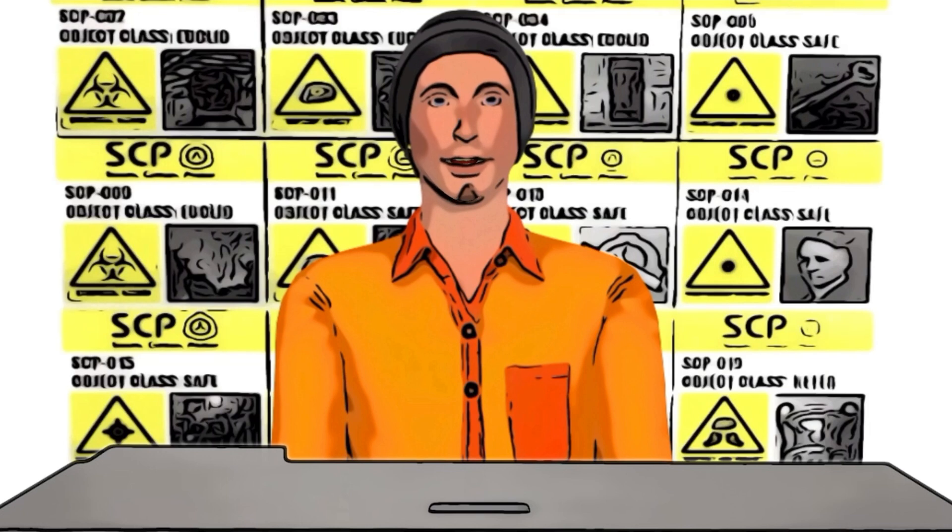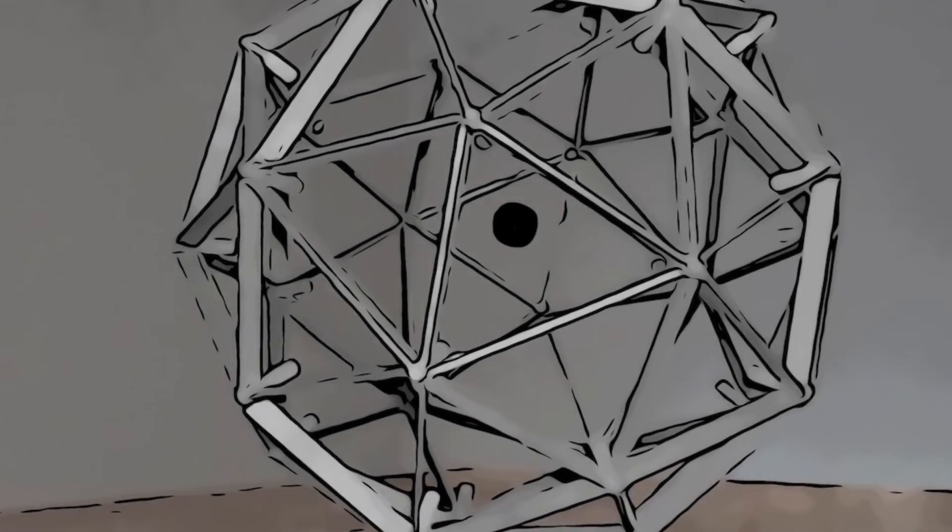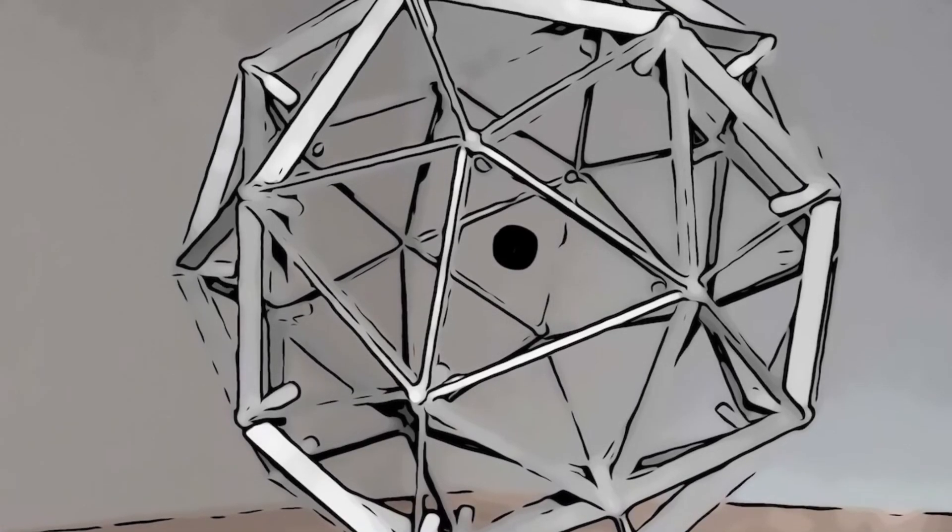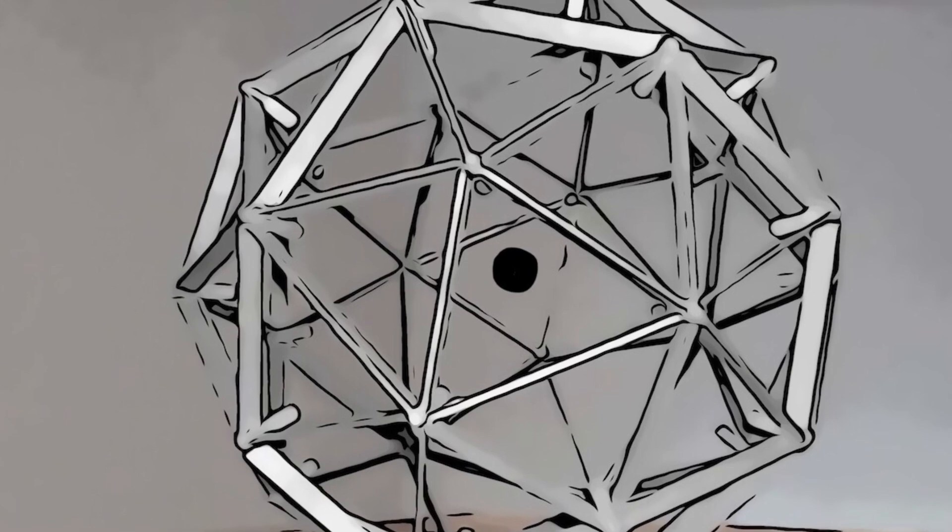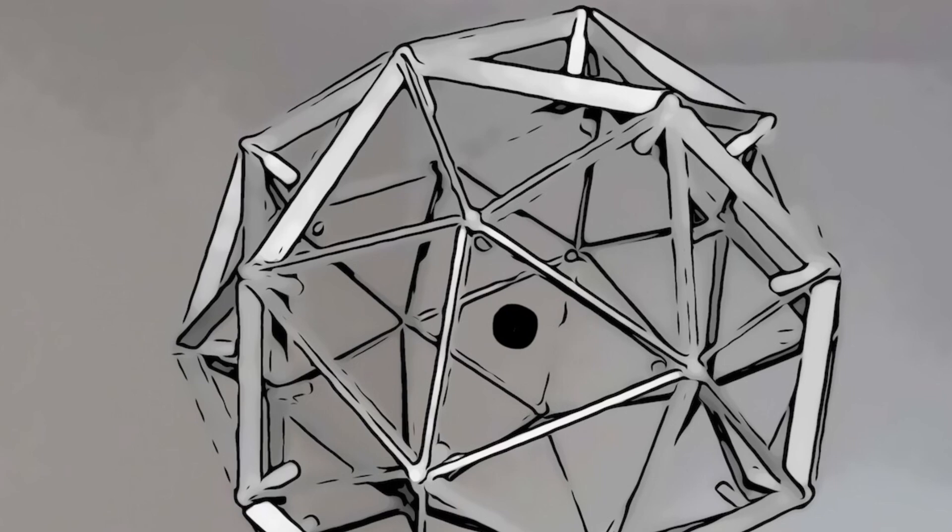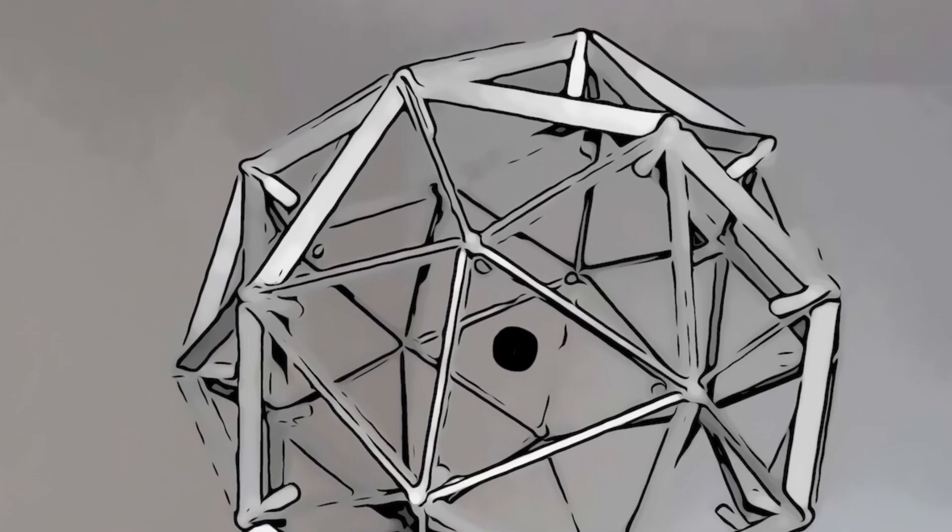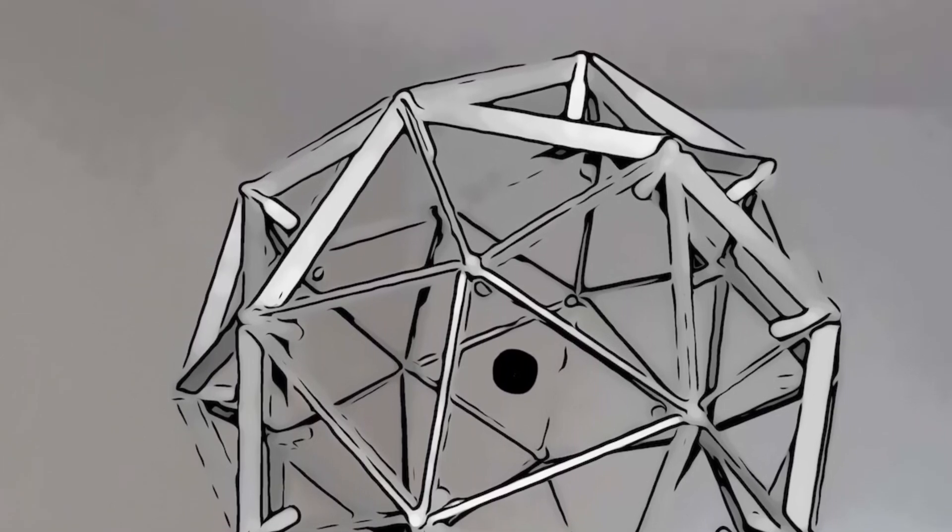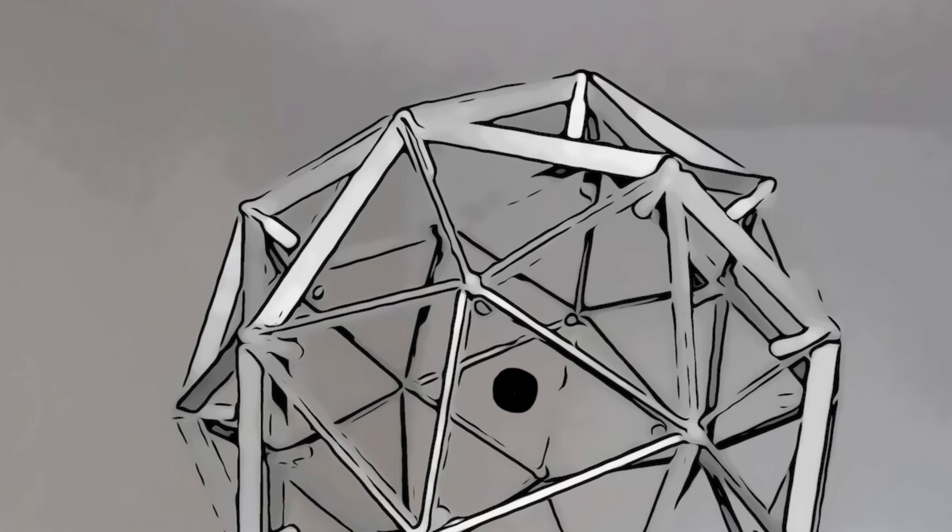This object has been classified as Euclid, and it's important to follow specific safety measures when dealing with it. SCP-123 is a gray geodesic sphere with a diameter of 65 centimeters, made up of 60 triangles. The areas between the triangles are empty, revealing the center of the sphere. The material from which the sphere is made is unknown and has only been studied visually upon a redacted researcher's recommendation.